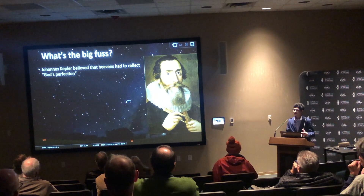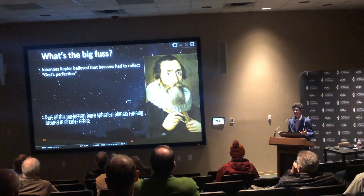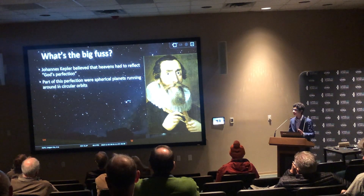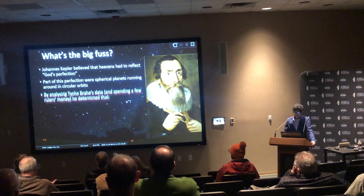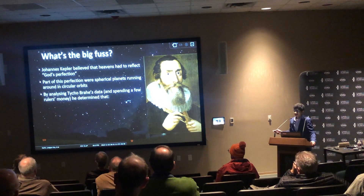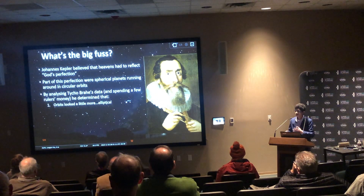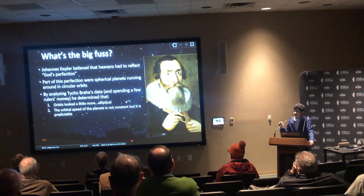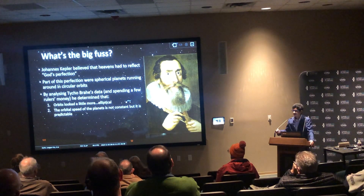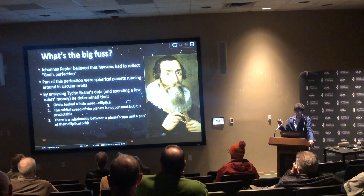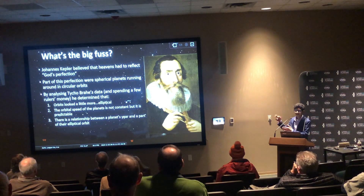He was also a big Catholic and believed that the heavens had to reflect some of God's perfection. Part of this perfection was planets running around in circles and perfectly spherical planets, because frankly, circles are cool. By analyzing another astronomer's data and spending money that wasn't necessarily his, he figured out that orbits first weren't just perfectly circular — they were more elliptical. And the orbital speed isn't constant, but it is predictable: a planet gets faster and slower but within a pattern. And finally, there's a relationship between how long a planet takes to orbit and a measurement of their elliptical orbit.